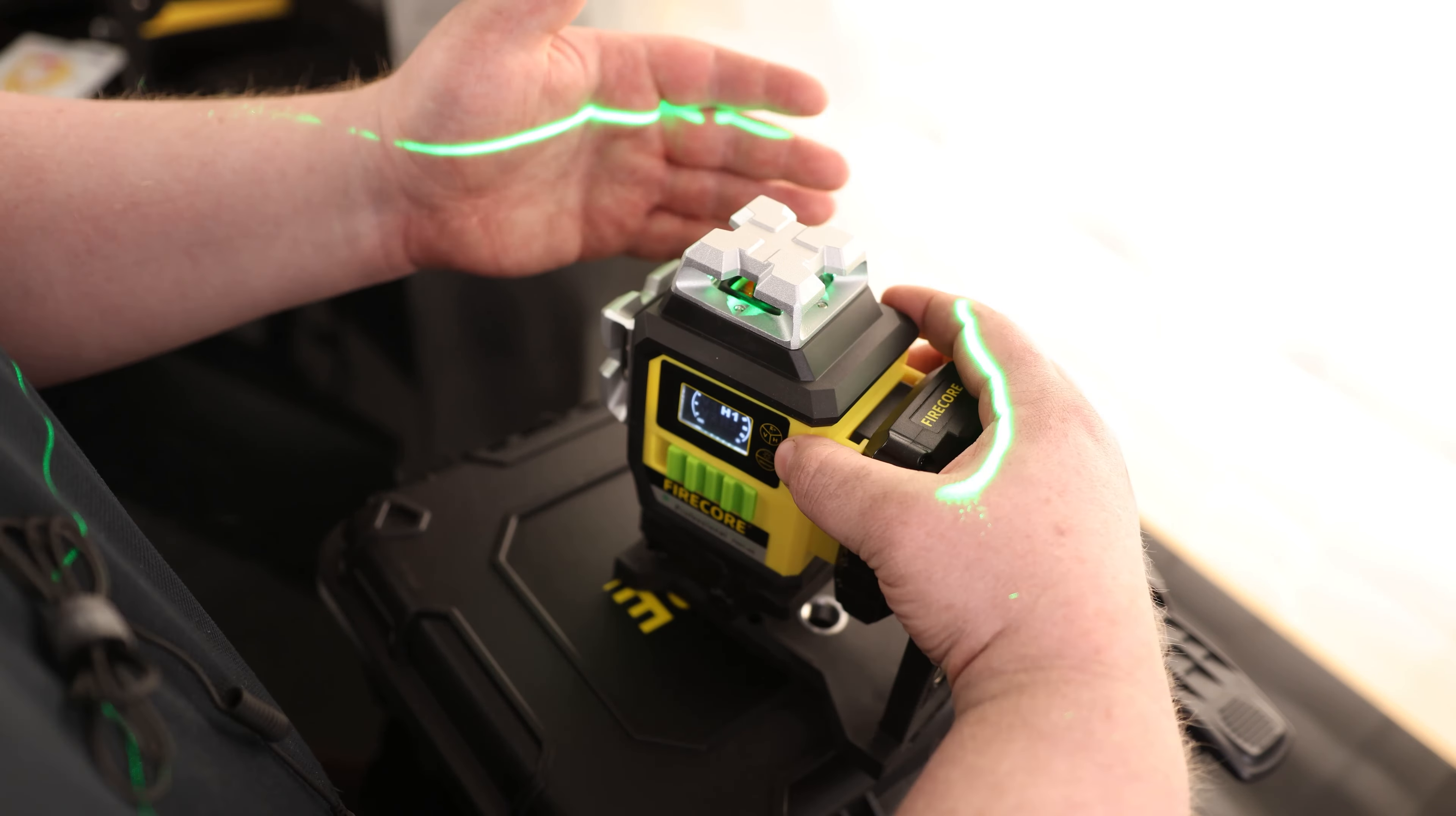Now if we press and hold that button, now we are in pulse mode. So if you have a receiver, then you'll be able to put this guy so far away that you won't even be able to see the lasers, but the receiver will be able to see that. You'll be able to tell if you're still in level. So awesome that it has that function.